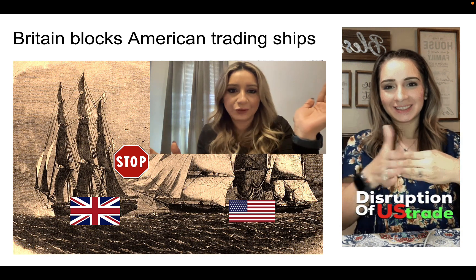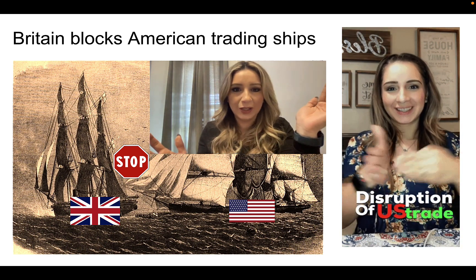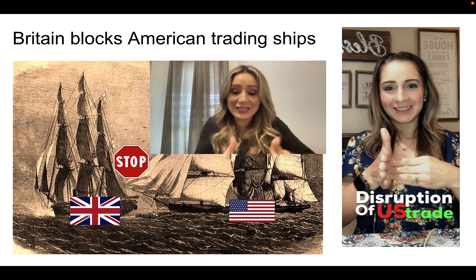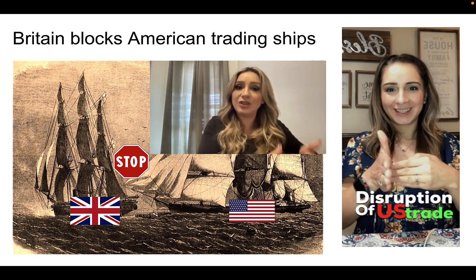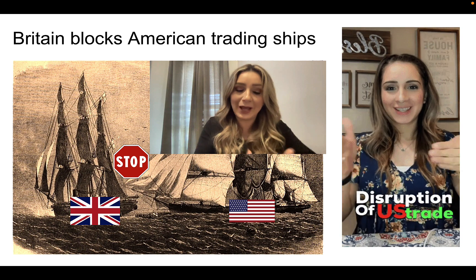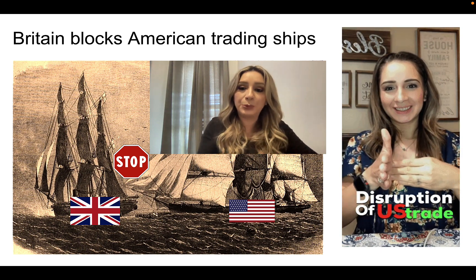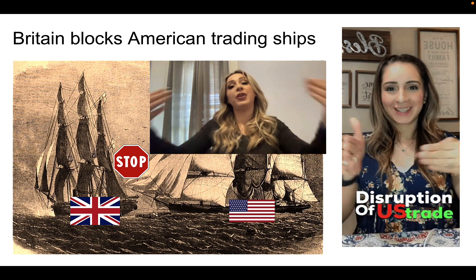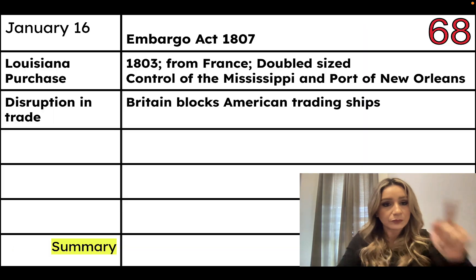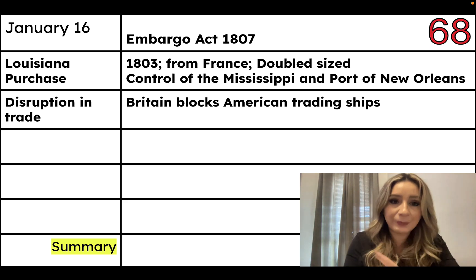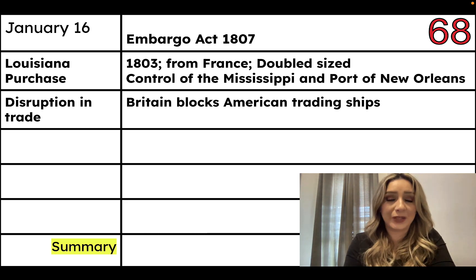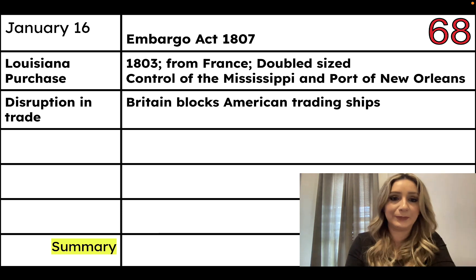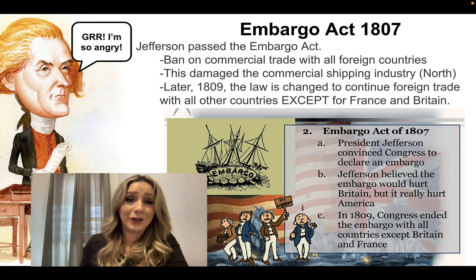Think about that word 'disrupt' — when a student disrupts my classroom, they are not allowing me to teach. So when Britain disrupts our trade, they're not allowing us to trade with other countries. Write this down: disruption in trade — Britain blocks American trading ships. This angers Thomas Jefferson because he's trying to stay neutral. And so what Jefferson does in response to the disruption in trade is he passes something called an Embargo Act.